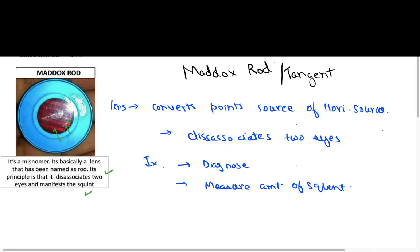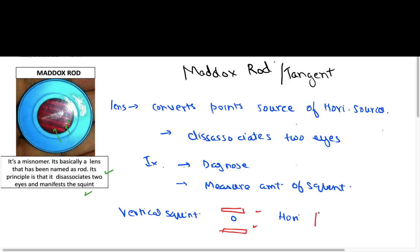If there is a vertical squint, the second image formed would be a horizontal image, and it would be either above or below. In case there is a horizontal squint, there would be a vertical line either to the left or to the right.